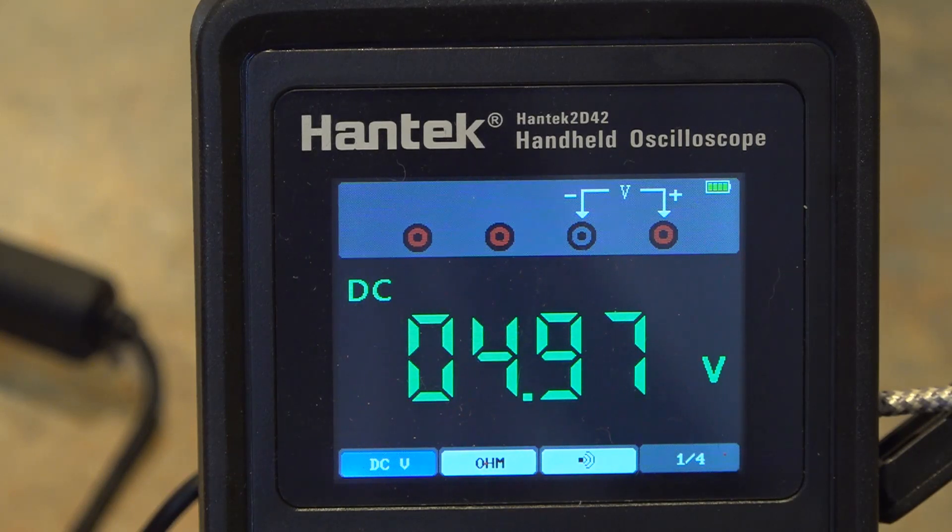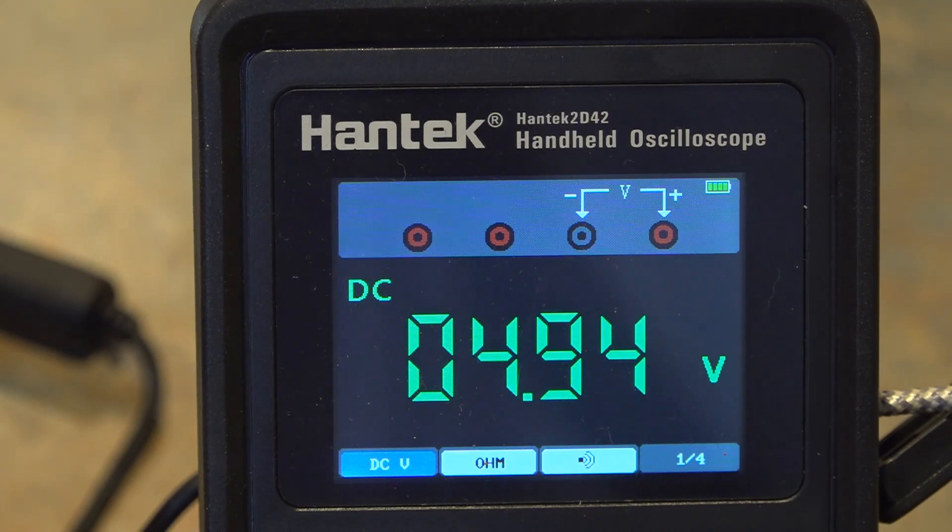And we get 4.97 volts, 4.96, so that's not too bad that's pretty good. And you can see it actually shows you where to hook up the scope probes on the display on the Hantech so you know exactly where you're hooking up everything.